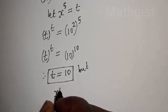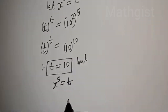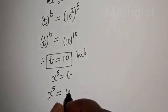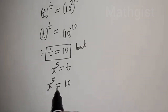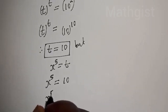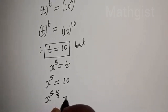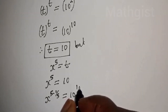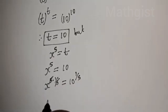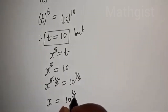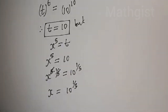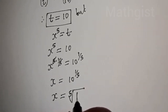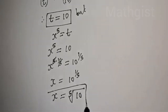But s raised to power 5 is equal to t, and s raised to power 5 is equal to 10. Now we are looking for the value of s. Let's multiply the power of both sides by 1 over 5: s raised to power 5 times 1 over 5 is equal to 10 to the power 1 over 5. This cancels, giving s is equal to 10 raised to power 1 over 5, which can be written as s equals the 5th root of 10. This is the final answer.